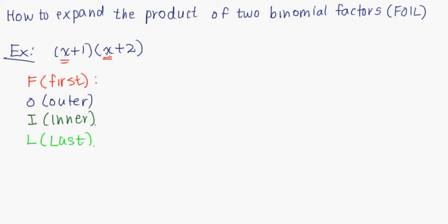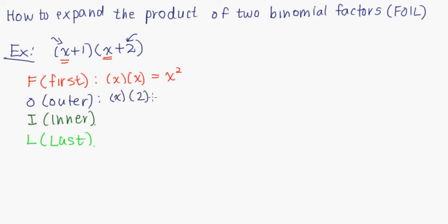so that's the x and the x here. We have to multiply these two terms, so we have x times x, which is x squared. Outer is the first term in the first factor and the last term in the last factor — the outer terms of this product. So that is x times 2, which is 2x.